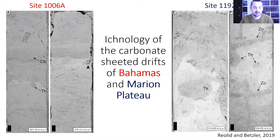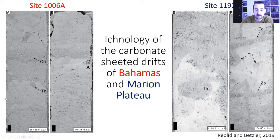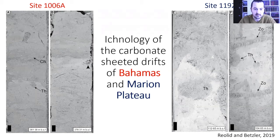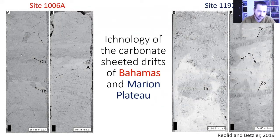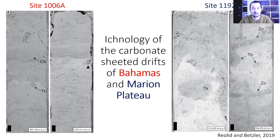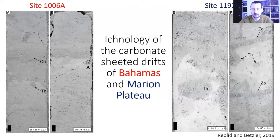The same features appear in drifts from the Bahamas on the left and from the Marion Plateau in Australia on the right — bioturbated throughout with an intensity so high that individual trace fossils cannot be distinguished. When it is possible to distinguish them, it is at color contacts between sediments of different brightness, where we see Thalassinoides, Chondrites, or Zoophycos. Again: intense bioturbation, few individual recognizable trace fossils, and a mixture of trace fossils from different tiers all mixed together.